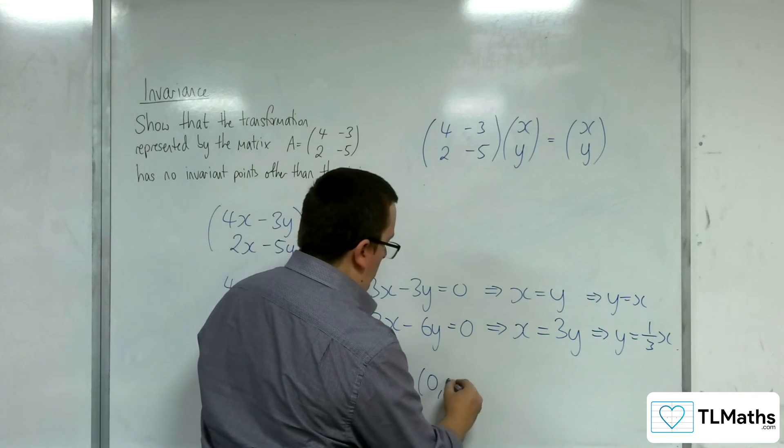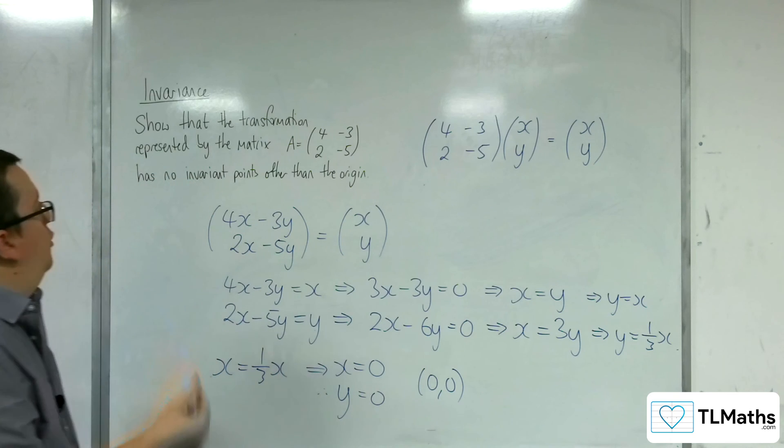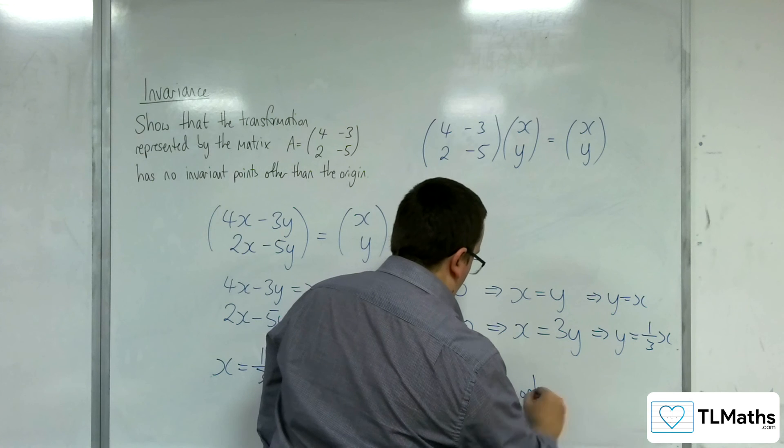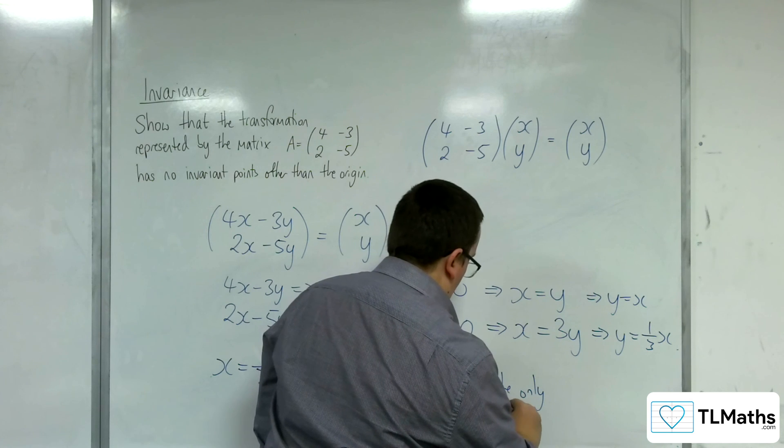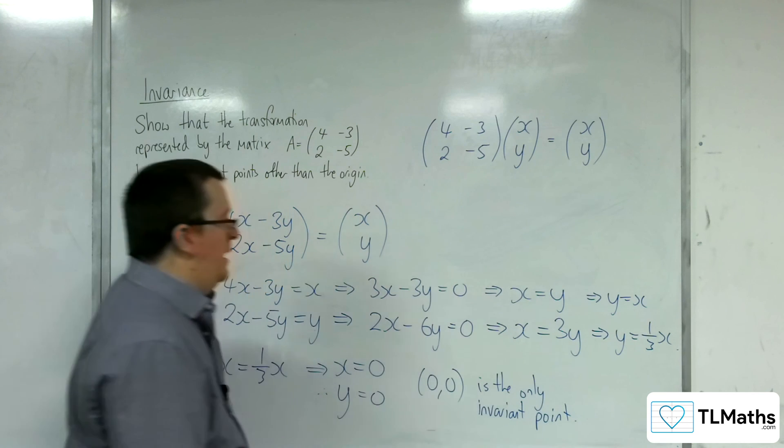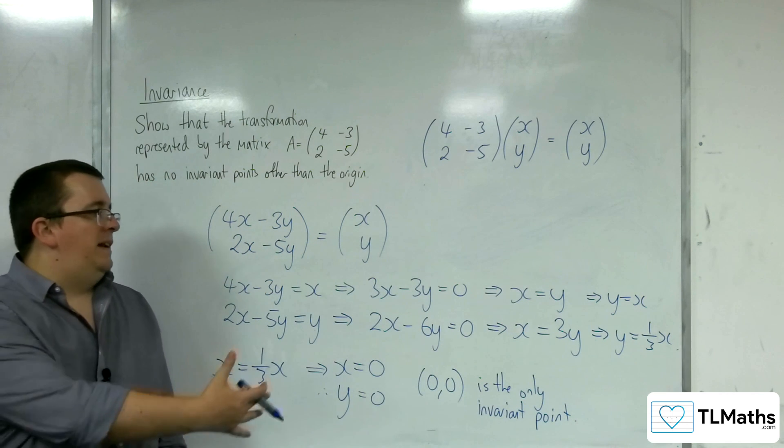So (0, 0) is the only invariant point, as the question suggested. And so that is made clear by the algebra.